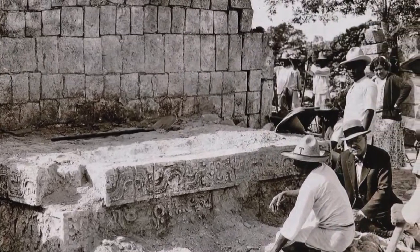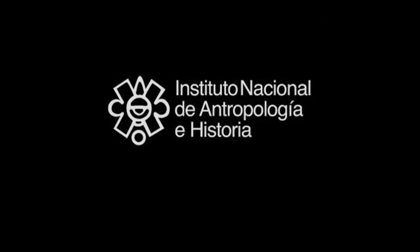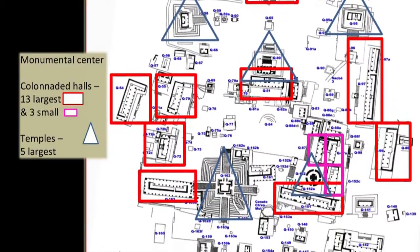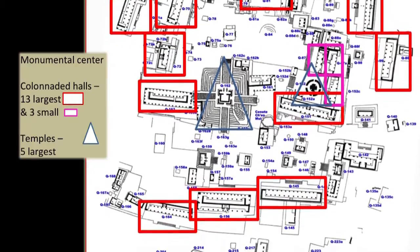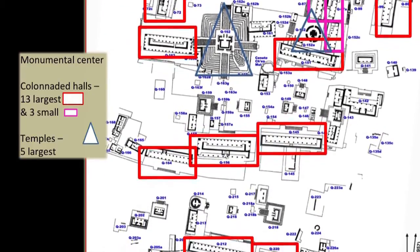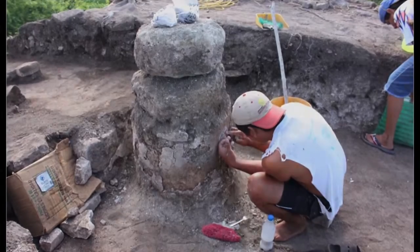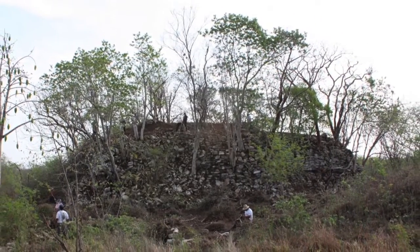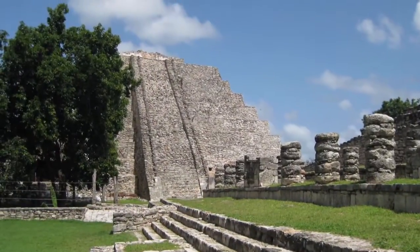Mayapan is now receiving new recognition as one of the most important ancient Maya cities. Mexico's National Institute of Anthropology and History, or INAH, has been restoring the site's monumental center since 1996, and it is open to tourism. These downtown temples, shrines, and colonnaded meeting halls were built and used by important lords and priests of the city's confederated government. Restoration has transformed this sector from a jumbled set of rubble mounds overgrown with trees to a majestic city of gleaming masonry temples, colonnaded halls, shrines, and altars.